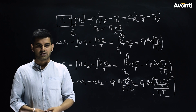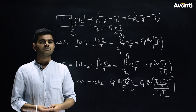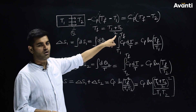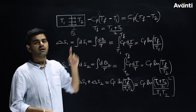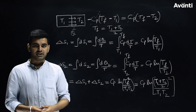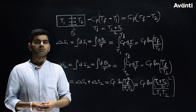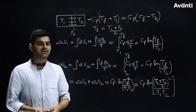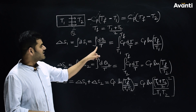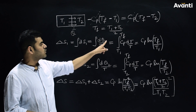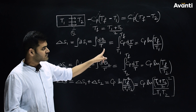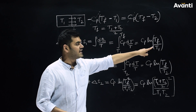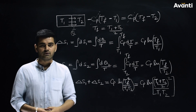From this equation, Tf comes out to be (T1 + T2) / 2. Now, ΔS1 is the change in entropy for block 1, which can be written as the integration of dQ1 / T, and it comes out to be Cp·ln(Tf / T1).